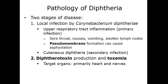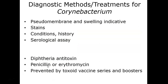Treatment uses an antitoxin to neutralize the diphtherotoxin, plus antimicrobial therapy such as penicillin or erythromycin. Vaccination via the DTaP — diphtheria, tetanus, and pertussis — is the key preventive measure, requiring a booster every 10 years or so.